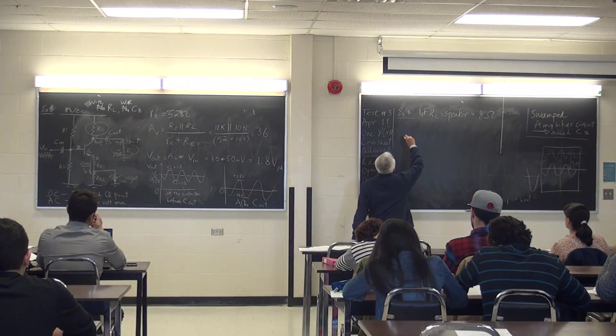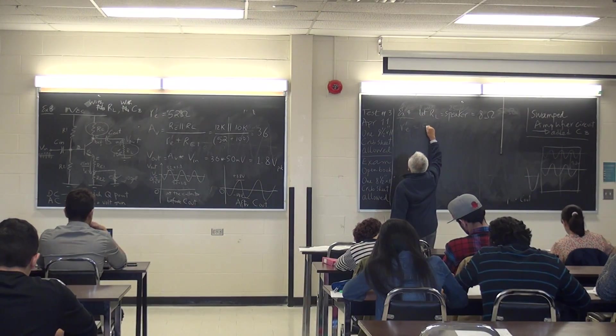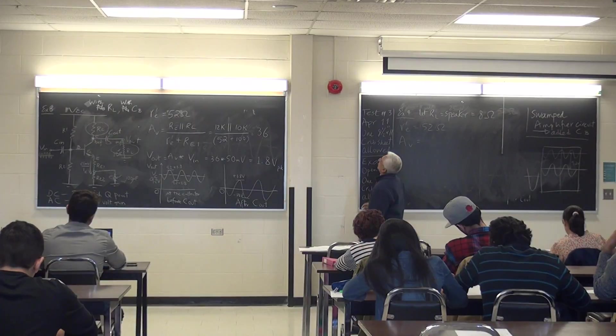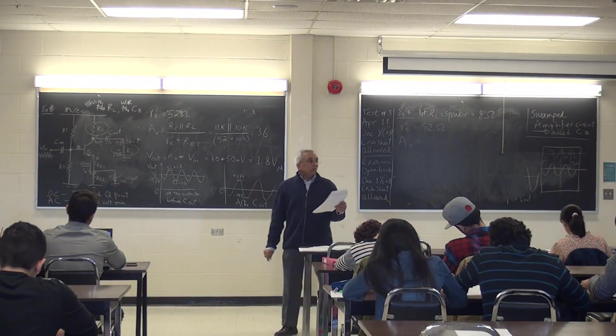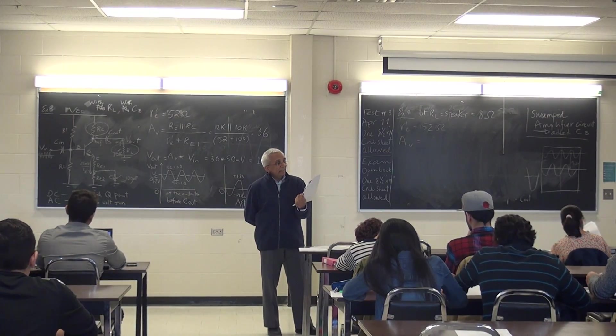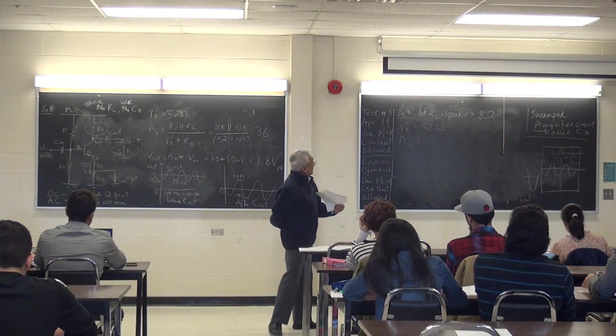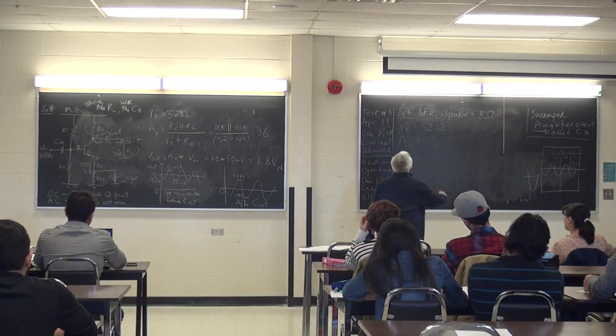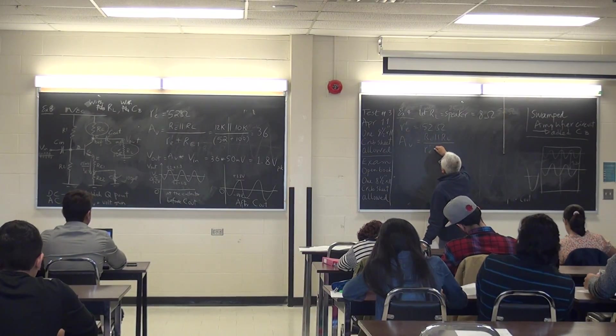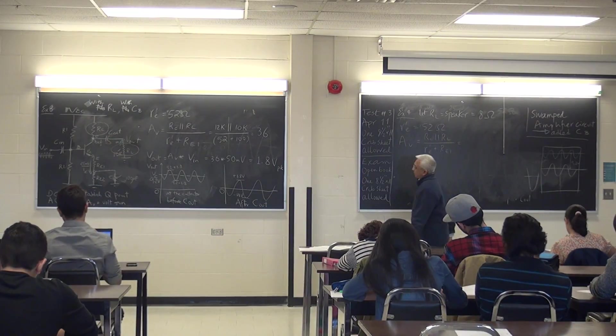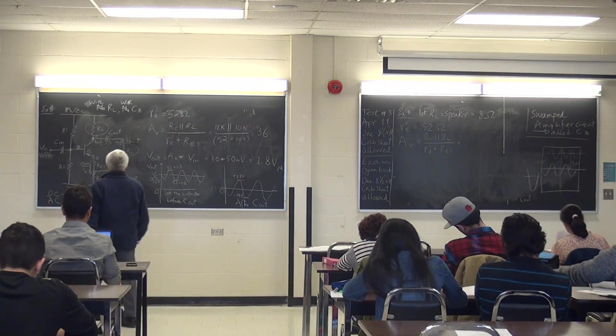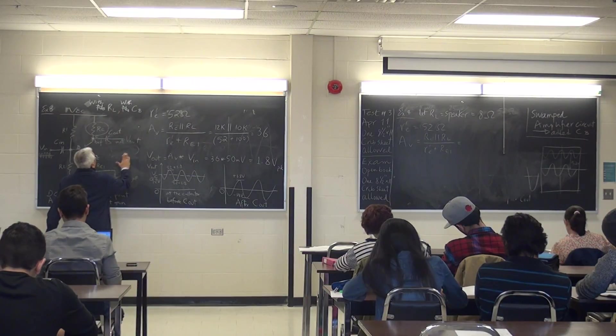So let's calculate r'e, 52 ohms. AV, same as example 3. So the only change is RL from 10k. I have 8 ohms. I have 8 ohms. I still have the bypass capacitor, so I use the same equation. RC in parallel with RL, r'e plus RE1. So what am I saying? This is what I'm saying.